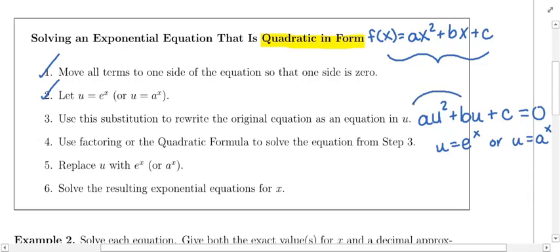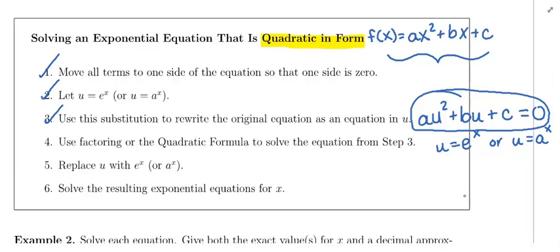Working with your equation in this manner, you forget about the exponential part for a minute. This is something familiar: a·u² + b·u + c = 0 is like having ax² + bx + c = 0 except we have u instead of x. We're going to solve a·u² + b·u + c = 0 for u the same way we normally solve a quadratic equation — using factoring or the quadratic formula.